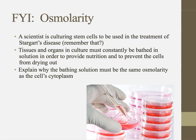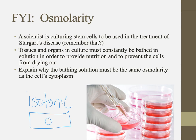Let's say I'm culturing some tissues — some stem cells — to treat Stargardt's disease, where stem cells are used to grow new retinal cells for people whose retinal cells can't absorb vitamin A. The cells in our Petri dish must constantly be bathed in an isotonic solution, meaning the concentration of solutes must be the same inside and outside the cell. We don't want water rushing in or out — no cells shrinking or blowing up. So we need to keep them in an isotonic solution.